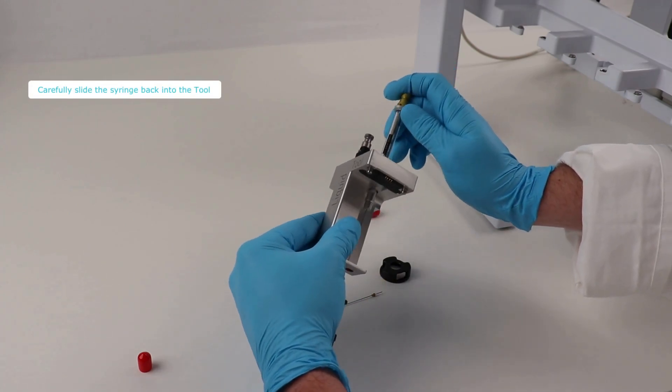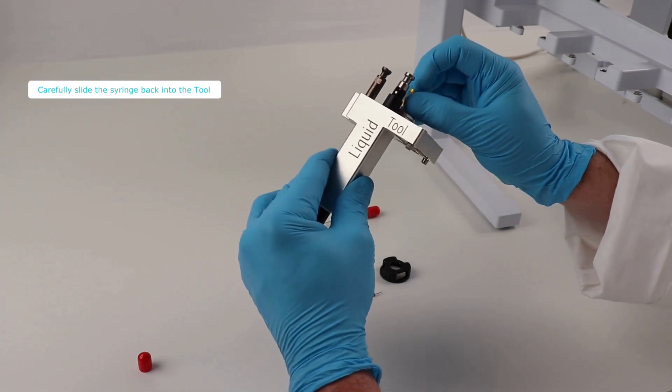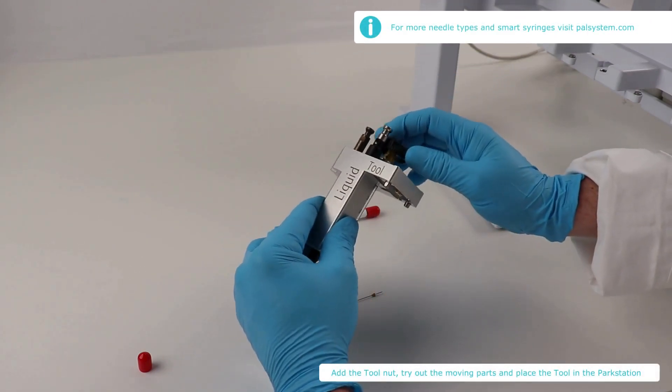Once the syringe is ready, carefully put it back by sliding it into the tool. Add the tool nut, screw it, and try out all the moving parts to make sure the tool is functional.